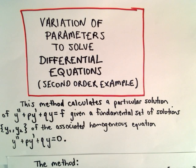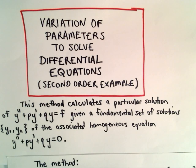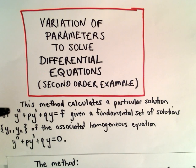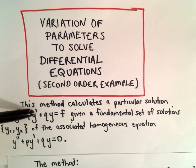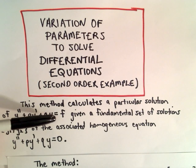In this example, I'm going to look at variation of parameters to solve differential equations, specifically a second-order differential equation. You can easily generalize this procedure for higher-order examples as well — you do the exact same thing, you just get a larger system of equations to solve. What this method does is calculate a particular solution of y'' + p·y' + q·y = f, where these are all functions of x.